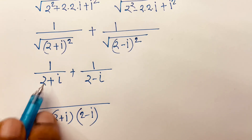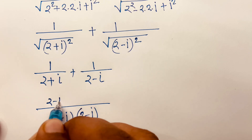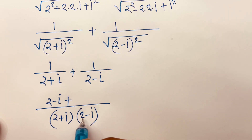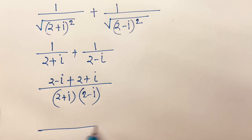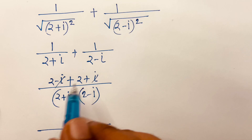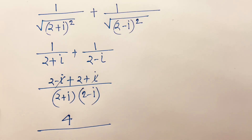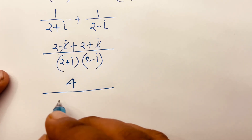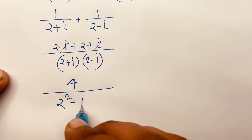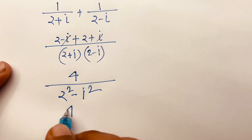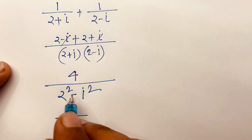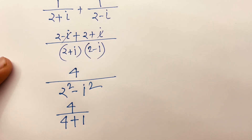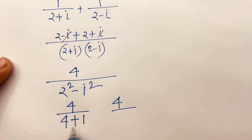Combining the fractions: (2 - i + 2 + i) over (2 + i)(2 - i). The i terms cancel in the numerator giving 4. The denominator uses (a + b)(a - b) = a² - b², so (2 + i)(2 - i) = 4 - i² = 4 - (-1) = 5. Therefore the answer is 4 over 5.